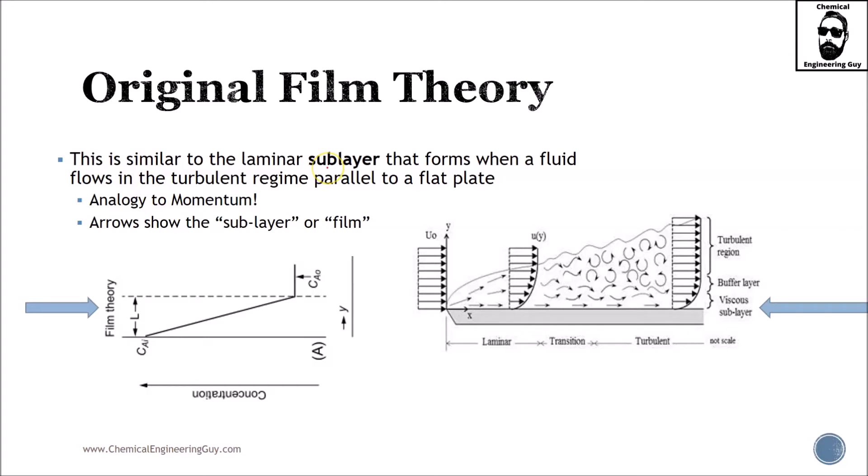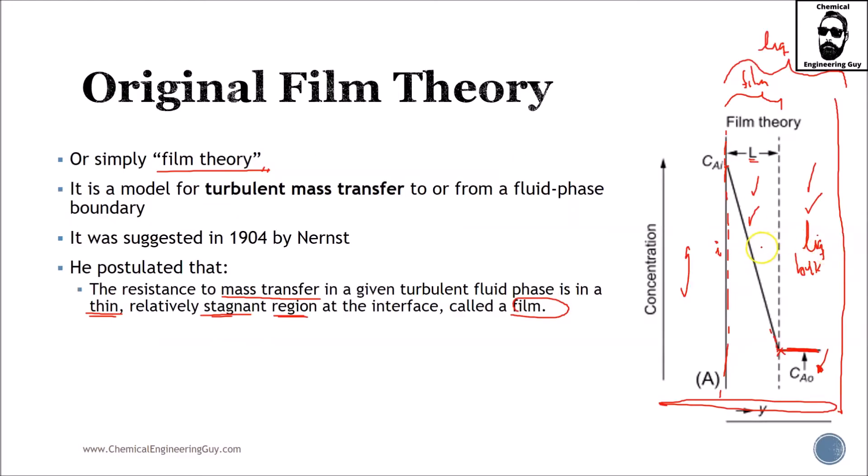This is similar to the laminar sub-layer that forms when fluid flows in turbulent regime parallel to a flat plate. Near the interface you have the most interaction, near the bulk phase the least. The main problem is we're assuming one thin layer, ignoring all the gas part that changes as well.